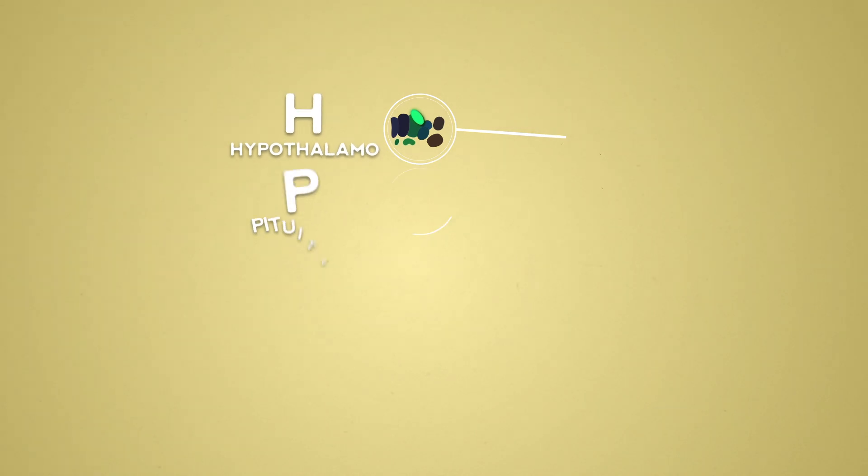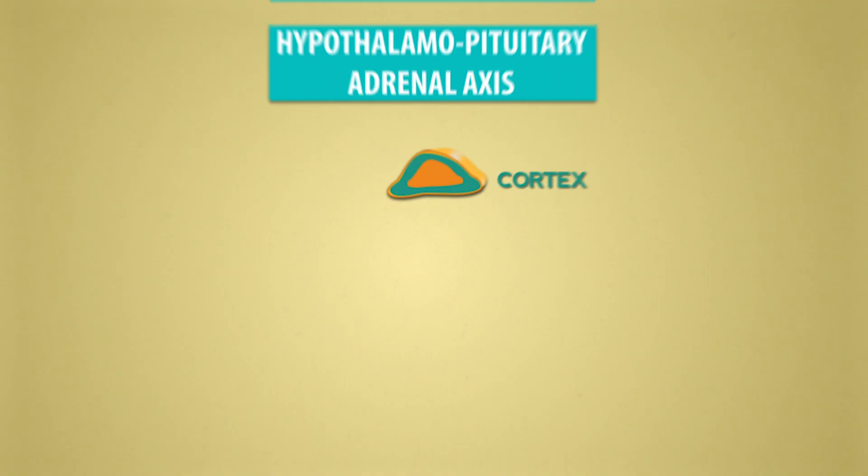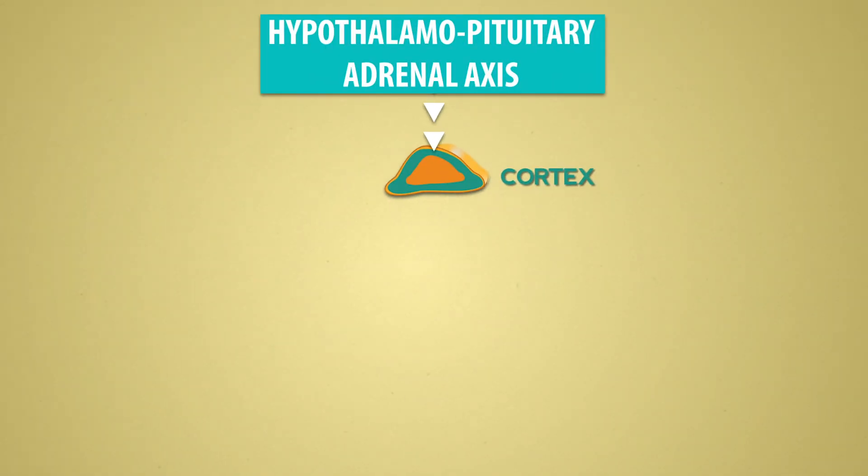In parallel, the hypothalamic-pituitary-adrenal axis is also activated. The HPA axis targets the adrenal cortex, inducing the release of cortisol.